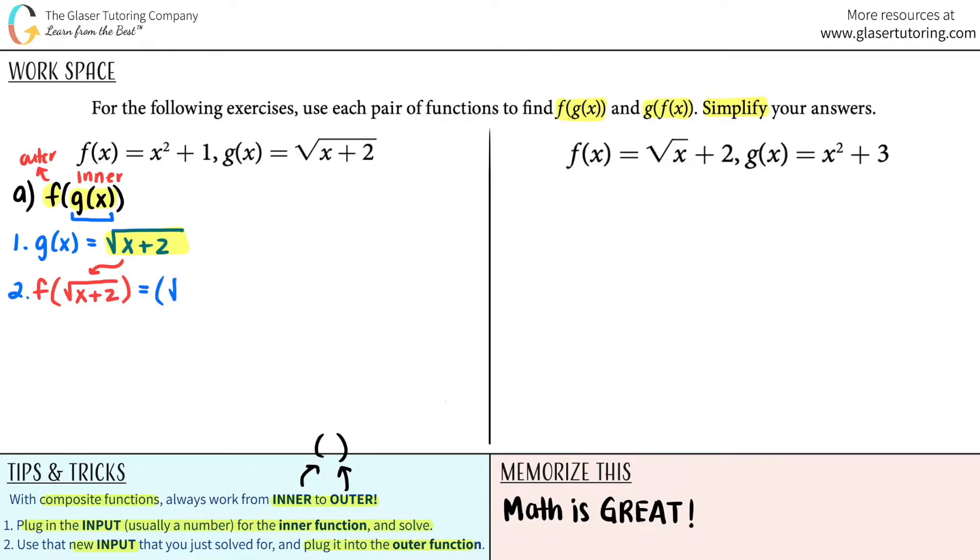So square root of x plus two squared plus one. And now you just have to simplify. So if I say f of the square root of x plus two, a square root being squared, bye-bye, they are inverses of each other. So now you're just left with x plus two plus one. And now if I sum this all up, I can say f of square root of x plus two is the same thing as f of g of x. And it would be x plus three. Two plus one is three. So this is your final answer for the first part, f of g of x.